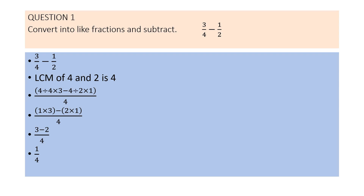3 by 4 minus 1 by 2. Children, as you can see, the denominators of both fractions are not the same. We need to make the denominators the same. For that, we will find the LCM of both denominators, which are 4 and 2. On solving, we get the LCM of 4 and 2 is 4.